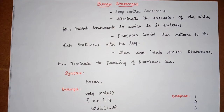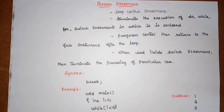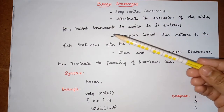Welcome to the class. In this session we are going to discuss two statements: the break statement and the continue statement. The break statement is generally called a loop control statement because it is used to terminate the execution of loops. There are three loops: for loop, while loop, and do-while loop. We can use the break statement inside these three loops, and also inside switch statements.